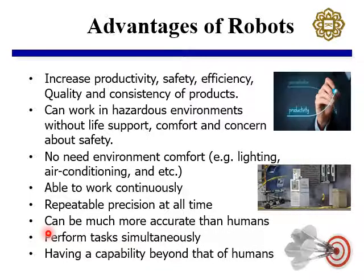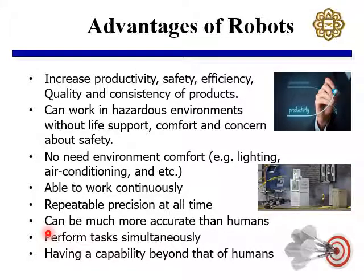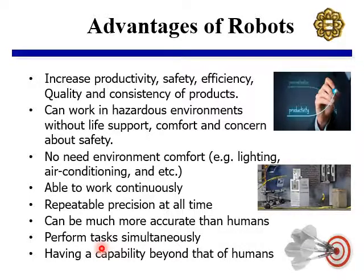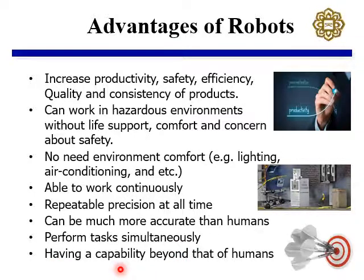Positional accuracy and manufacturing accuracy are much better for robots as compared to any human operator. Also, some level of parallel tasking or simultaneous working is possible for robotic systems, but for humans it is not possible. As a whole, we can say that a robot has some capability that is beyond the limit of any human being.